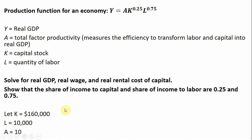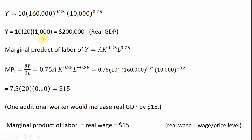We're going to assume that the capital stock is currently at $160,000, the number of workers in this economy L is 10,000, and our total factor productivity is 10. So the first thing we'll do is take those values — A equals 10, K equals 160,000, and L equals 10,000 — and plug them into the aggregate production function.